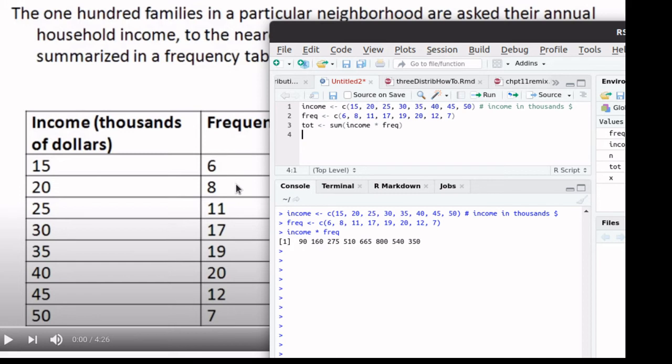Well, there were six plus eight plus 11 plus 17, so n is simply going to be the sum of the frequency column. So now I know the total all added up, and I know how many there are in the sample, so I can find the average as the total divided by n. I'm not going to save that in an object because I'm just interested in knowing what the mean is.